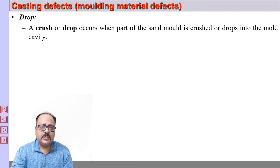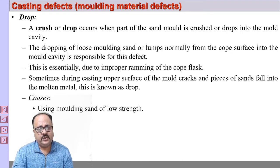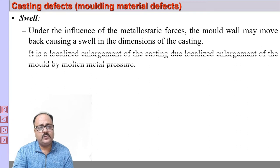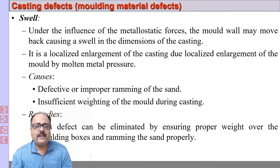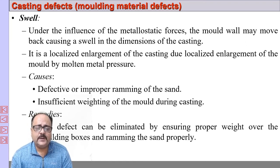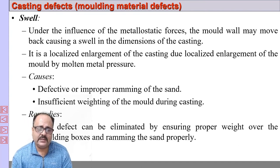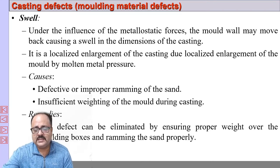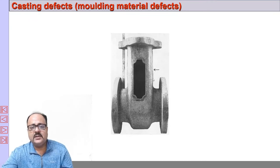Drop: sometimes the mold wall breaks and falls into the molten metal, normally from the cope side — this is called cross or drop. It is caused by using molding sand of low strength or improper ramming; rectifying those will solve the problem. Swell: this is a very interesting defect. Because of the high density of the metal and the resulting metallostatic forces, the sand wall sometimes buckles locally under metallostatic pressure, causing the casting to appear swollen — this is called swell.